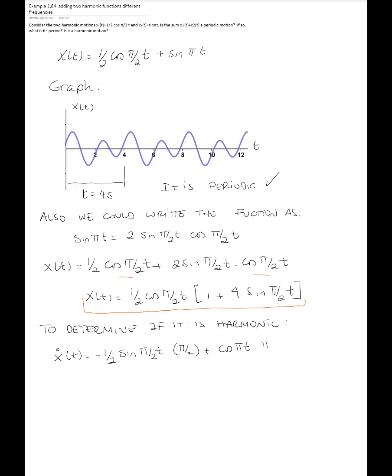If I derive this expression again, I get negative one half cosine of pi over two t, and the internal derivative is pi over two, so I have pi over two squared. Then the derivative of cosine of pi t is negative sine pi t, and the internal derivative is pi, so I have pi squared.